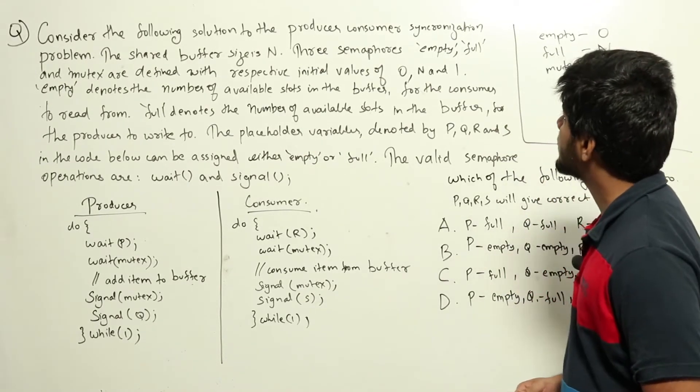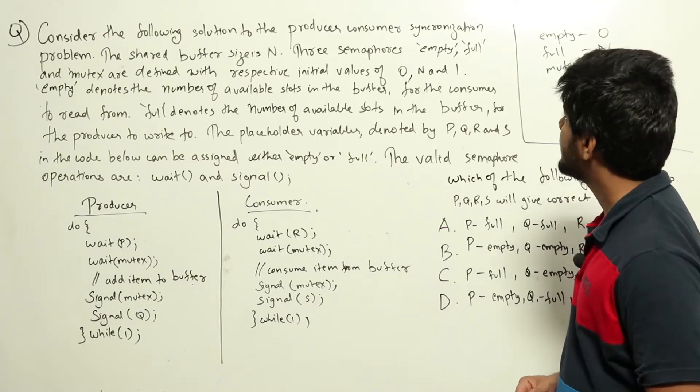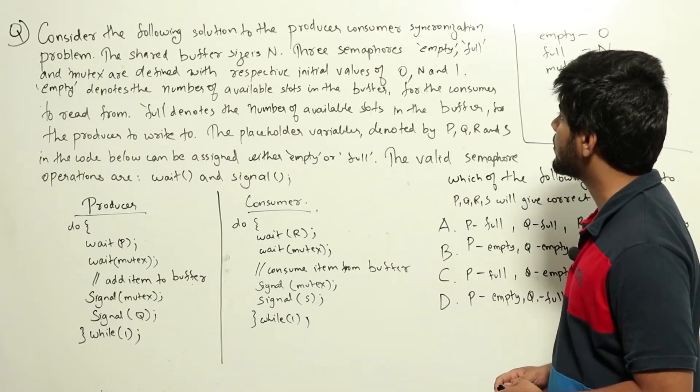Consider the following solution to the producer-consumer synchronization problem. The shared buffer size is n. Three semaphores, empty, full and mutex are defined with respective initial values of 0, n and 1.